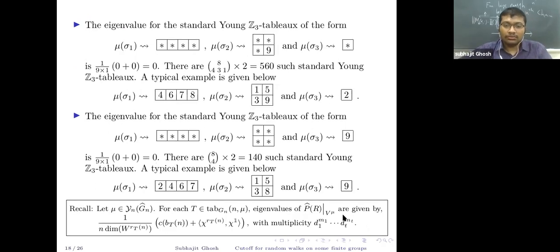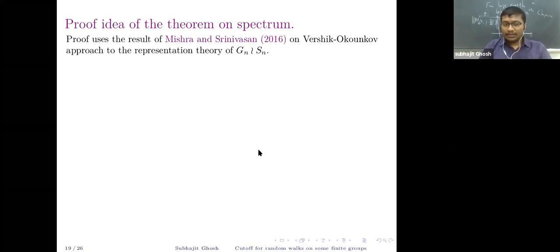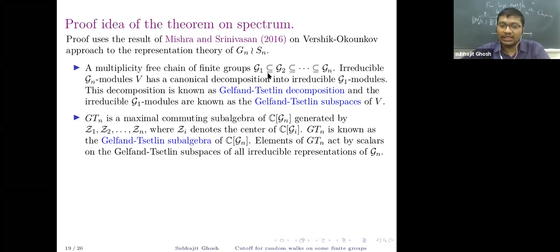More illustrations: when 9 is in a certain position, the eigenvalue is 0 with 560 tableaux, and in another configuration the eigenvalue is 0 with 140 tableaux. The proof idea follows from a result of Mishra and Srinivasan on the Vershik-Okounkov approach to the representation theory of G_n ≀ S_n. For a multiplicity-free chain G_1 ⊂ G_2 ⊂ … ⊂ G_n — meaning each irreducible G_i-module restricts to G_{i−1}-modules with multiplicity 1 — one obtains a canonical Gelfand-Tsetlin decomposition.